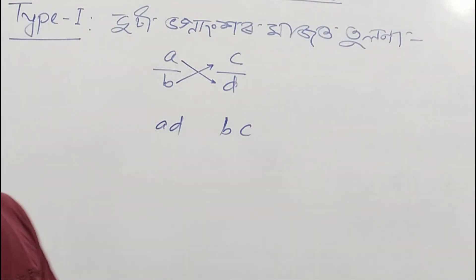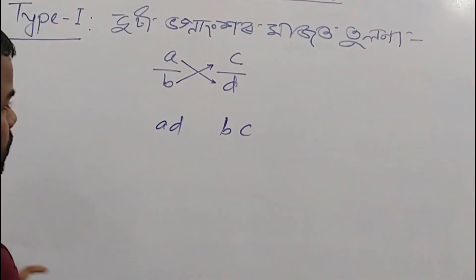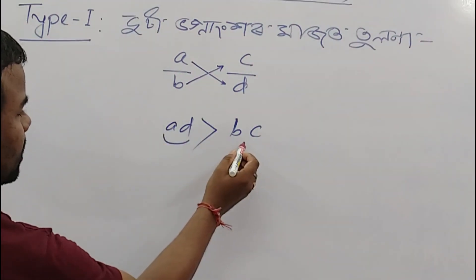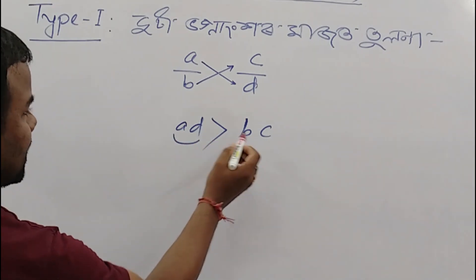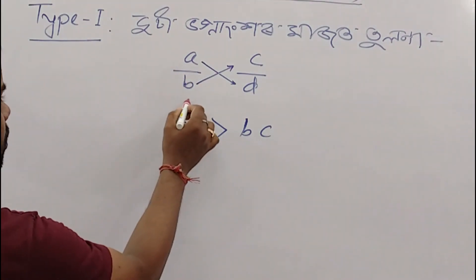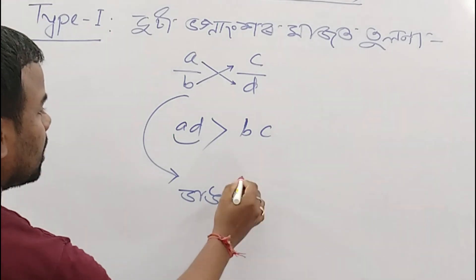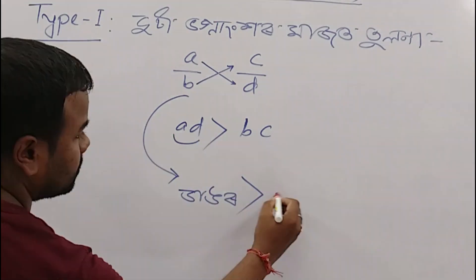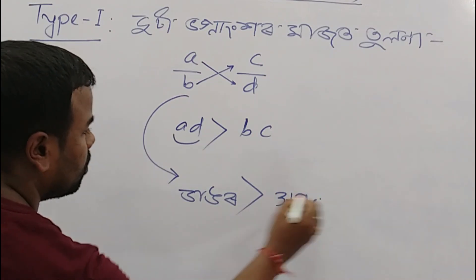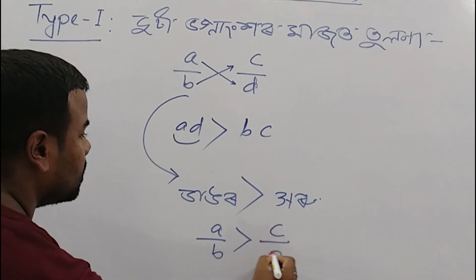So what does the first thing mean to do? If you do the first thing, then the second thing, then the first thing is to do. What does the first thing mean to do — do the first thing, then the third thing is to do. So A by B is greater than C by D.